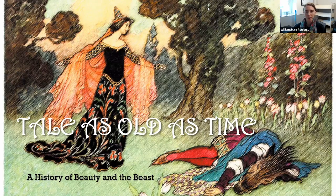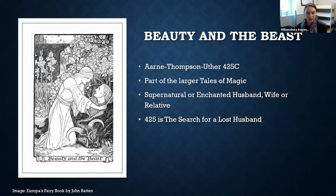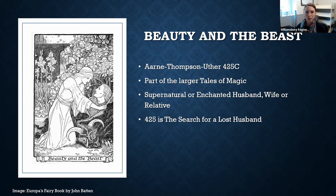Most of you are at least familiar with the tale of Beauty and the Beast. The story has a very long history, but there are several identifiable areas wherein most retellings work from a main theme. The elements expected for it to be a Beauty and the Beast story evolve over time, and that's what we're exploring today. Beauty and the Beast is classified by the Aarne-Thompson-Uther classification — a series of classifications for different types of fairy tales — as number 425C. It's part of the larger grouping 'Tales of Magic,' and the subgrouping 'The Supernatural Enchanted Wife, Husband, or Relative.' 425 specifically is 'The Search for a Lost Husband,' and Beauty and the Beast is the third subgrouping under that.